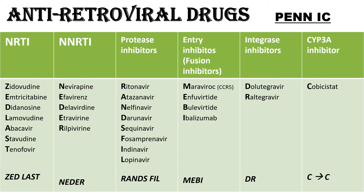In this video, let's have a look at antiretroviral drugs classification. The mnemonic here is PENIC: P stands for Protease Inhibitors, E for Entry Inhibitors, N for NRTI (Nucleoside Reverse Transcriptase Inhibitors), the other N is NNRTI (Non-Nucleoside Reverse Transcriptase Inhibitors), I is for Integrase Inhibitors, and C is for CYP3A Inhibitor.